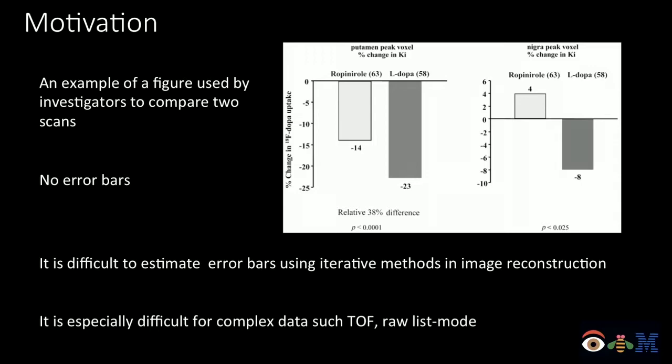Investigators compare measurements — for example, a ratio of activities between a volume of interest and a reference region — and report numbers. But we don't really know if the observed difference is real or just a chance occurrence for that scan. There are no error bars, and in iterative reconstruction, obtaining error bars is a very difficult problem that has been discussed for a long time without a really good solution.